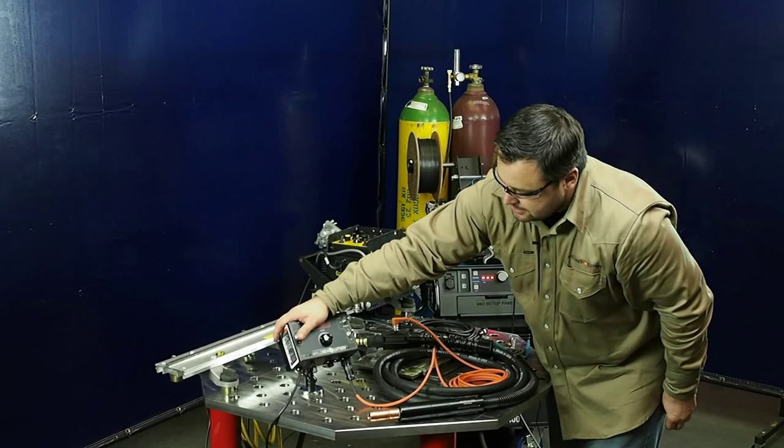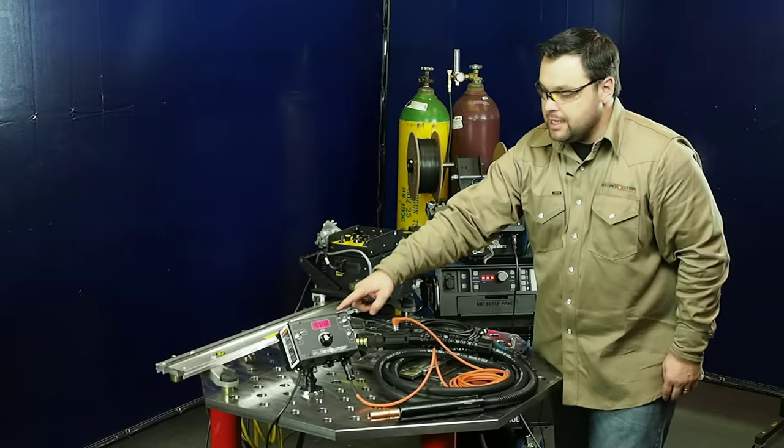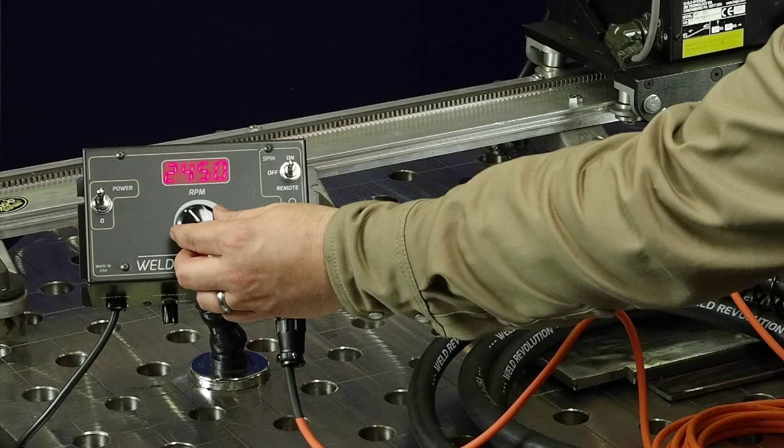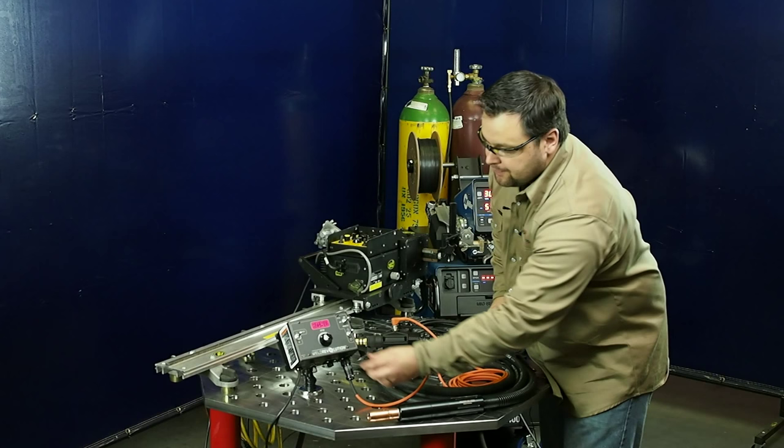Once that's connected, I would turn on the power and it displays the set RPM. I'm able to adjust this up and down. I'm going to set it at 2000 RPM at this point.